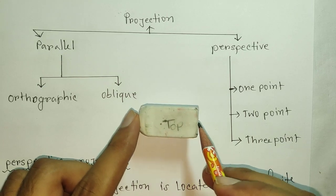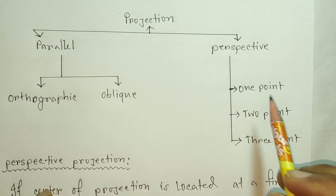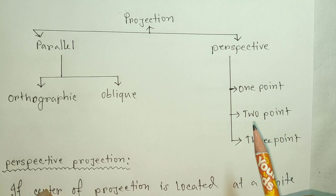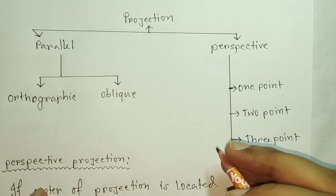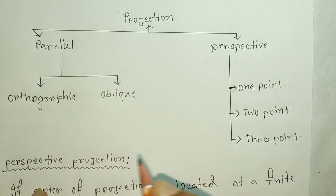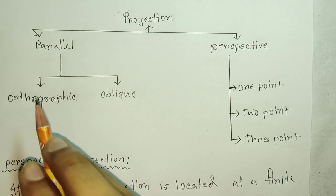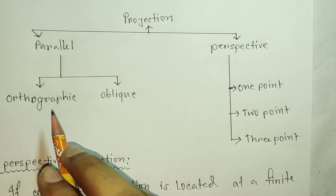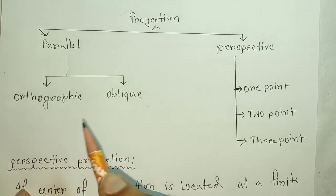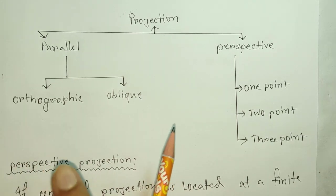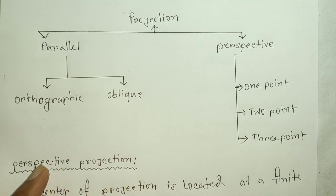In a parallel projection, you get exact measurements. In a perspective projection, distance and angle are distorted. In a parallel projection, angles are preserved and parallel lines remain parallel — parallel lines stay parallel in parallel projection.